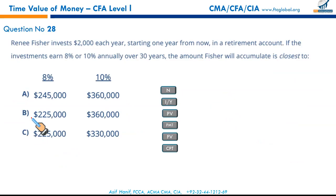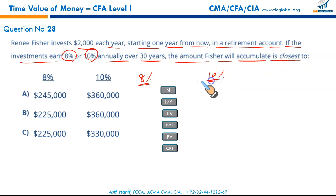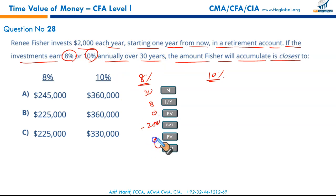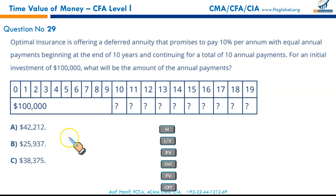Rini Fisher invests $2,000 per year starting one year from now in a retirement account. If the investment earns 8% or 10% annually over 30 years, the accumulated amount is? For 8%: N = 30, I/Y = 8%, PV = 0, PMT = $2,000 — compute FV. For 10%: N = 30, I/Y = 10%, PV = 0, PMT = $2,000 — compute FV. Results are $226,566 and $328,988 respectively.